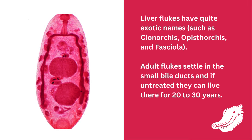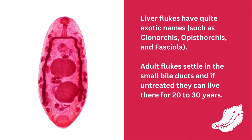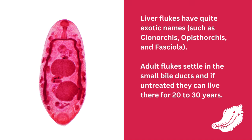Liver flukes have quite exotic names such as clonorchis, opisthorchis, and fasciola. Adult liver flukes settle in the small bile ducts and if untreated, they can live there for 20 to 30 years.